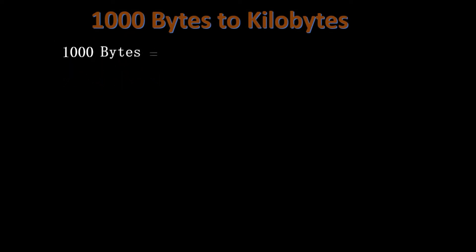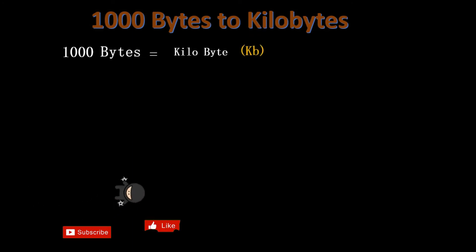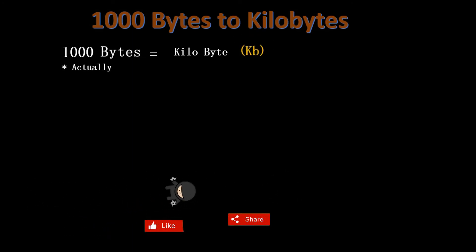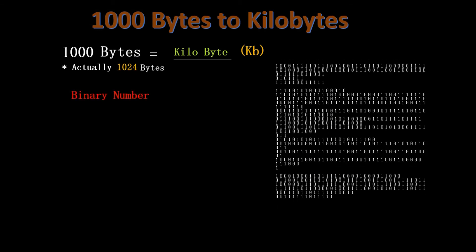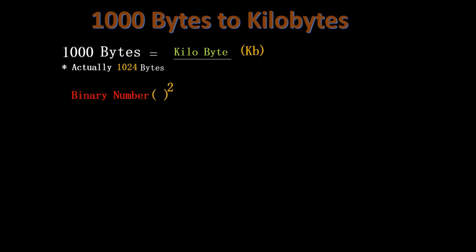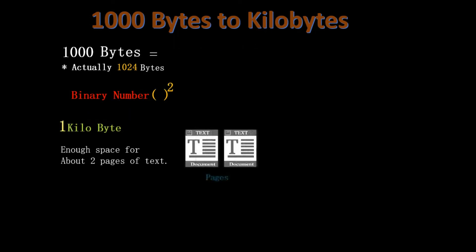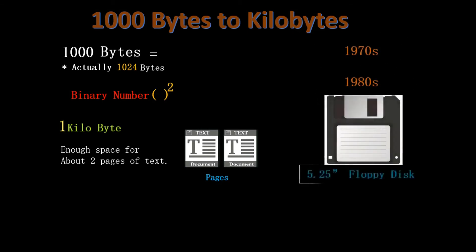Next, if we take 1,000 bytes and put them together, that is called a kilobyte, abbreviated as KB. Actually, there are 1,024 bytes in a kilobyte, and that is because computers use binary, and everything comes in powers of 2. So 1 kilobyte is enough space to hold about 2 pages of text. Back in the late 1970s and early 1980s, the 5¼-inch floppy disk was a popular storage option — it could hold 360 KB of information.